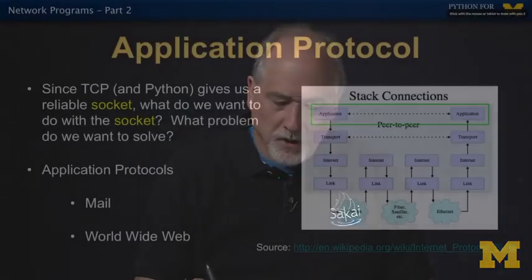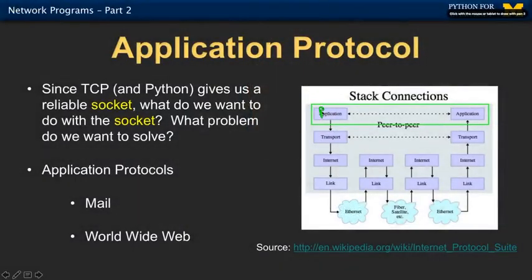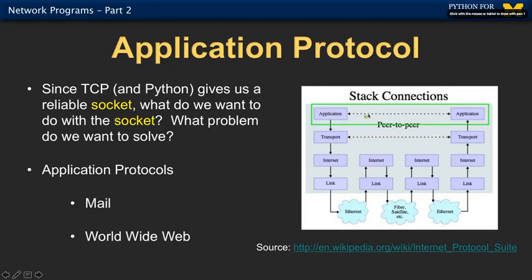We just took a look at the transport protocol, which is the first layer — the lowest end-to-end layer in the TCP/IP stack. We wrote a Python program, made a connection with the socket, and connected to a particular port on a far away computer. Now we're going to start sending data back and forth, which moves us from the transport layer up to the application layer. The application layer means there's something different when you're talking to a mail server than when you're talking to a web server.